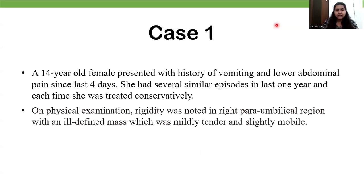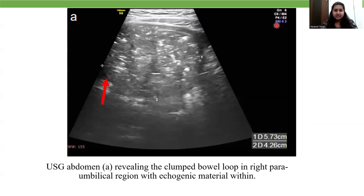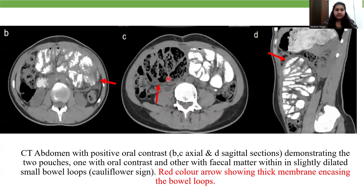Case 1: A 14-year-old female presented with history of vomiting and lower abdominal pain since the last four days. She had several similar episodes in the past one year which were treated conservatively. On physical examination, there was an ill-defined mass which was slightly tender and mobile, located in the right paraumbilical region. Ultrasound abdomen showed clumped-up bowel loops in the right paraumbilical region with echogenic material. CT abdomen with positive oral contrast demonstrated two pouches — one with oral contrast and another with fecal matter within slightly dilated bowel loops, suggestive of a cauliflower sign.